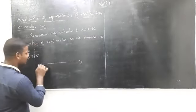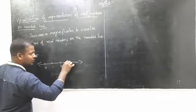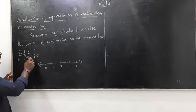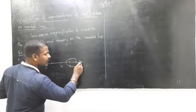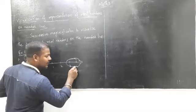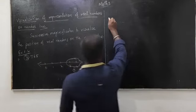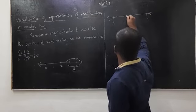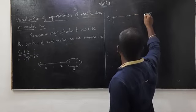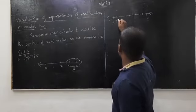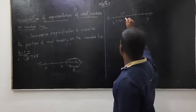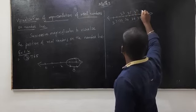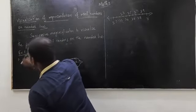Problem 1.4: Visualize 3.765 on the number line using successive magnification. First, represent the number line: 0, 1, 2, 3, 4... The first decimal digit is 3, so 3.765 lies between 3 and 4. Take a zoom of the segment between 3 and 4 and classify it into 10 equal parts: 3.1, 3.2, 3.3, 3.4, 3.5, 3.6, 3.7, 3.8, 3.9.